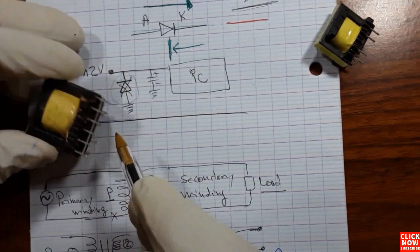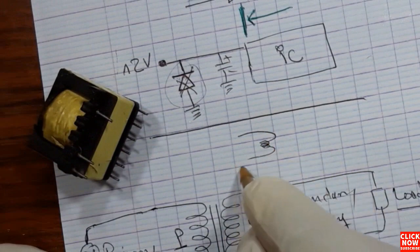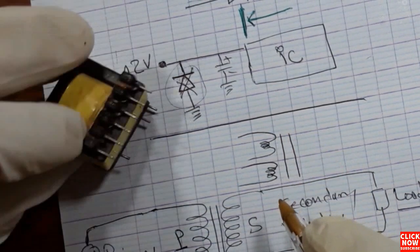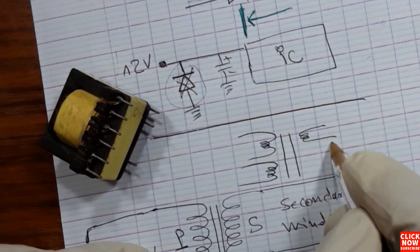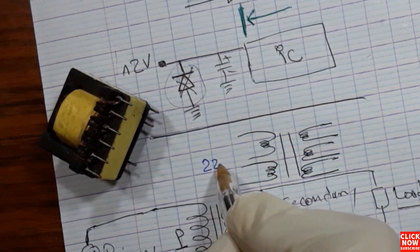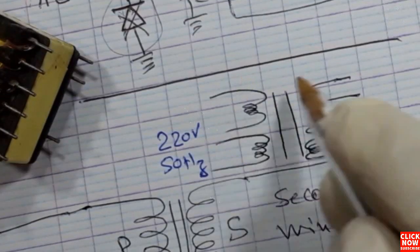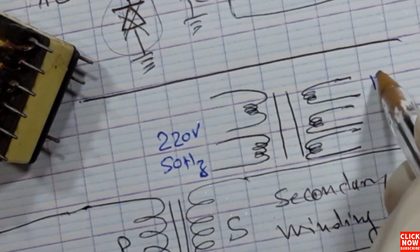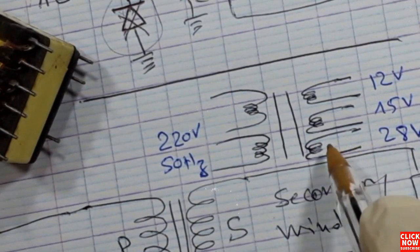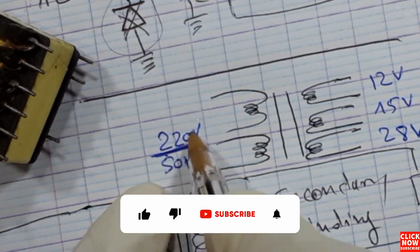Let's draw the schematic for this transformer. It has two inductors in the input and three inductors in the output, because it has six terminals in the output. For example, the input is 220 volts at 50 hertz, and in the output we get 12 volts on the first inductor, 15 volts on the second, and 28 volts on the third.